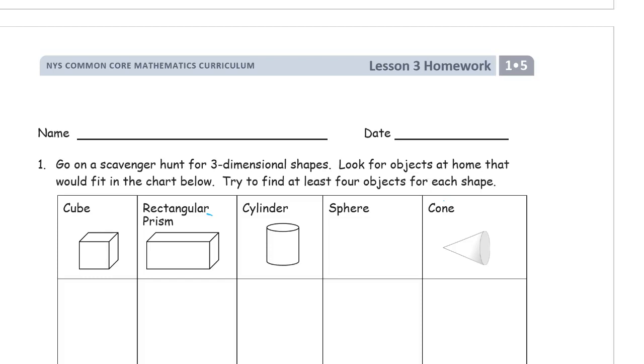Welcome to the homework for lesson three. This is module five of first grade. Write your name here. This says go on a scavenger hunt for three-dimensional shapes. Look for objects at home that would fit in the chart below and try to find at least four objects for each shape.